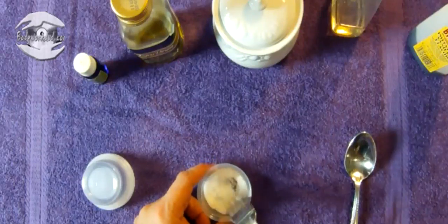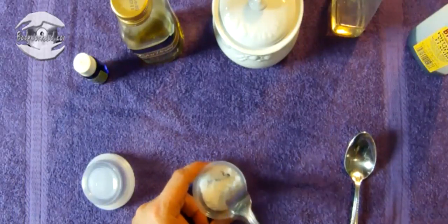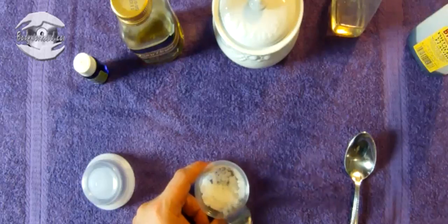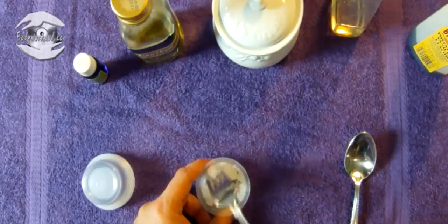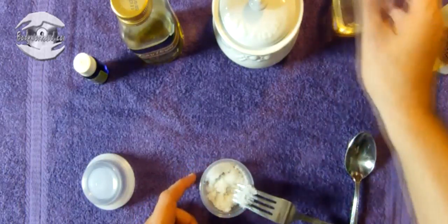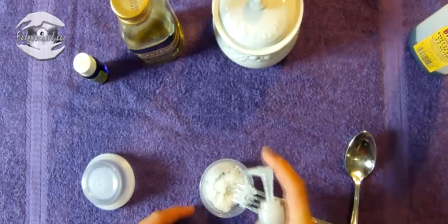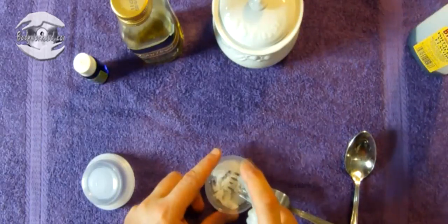And now we're going to mix it up. We want kind of a snow cone type of consistency when we do this. So you can see now it's a little too dry, so we'll put some more oil in. Two, three squirts should do it.